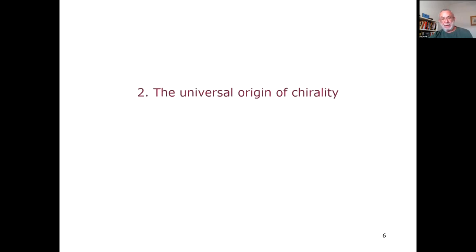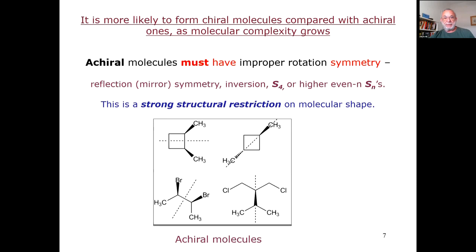Limiting ourselves to carbon-based water life only, we should ask which of these three characteristics can be regarded as a universal indicator of possible life beyond planet Earth. Let me start with the universal origin of chirality. First, we have to remember that it is more likely to form a chiral molecule compared with achiral ones as molecular complexity grows.